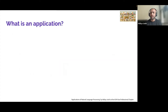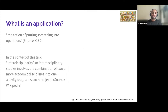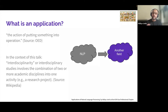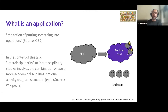Before we begin, let's understand what an application means. The definition is the action of putting something into operation, but in this context I'm referring to interdisciplinarity — combining one or more fields to show how NLP can help another field. There are two kinds of stakeholders to be mindful of: first, end users — who will use this application; and second, experts in the field which NLP is trying to help. As we progress through these applications, think about who the end users and experts are.